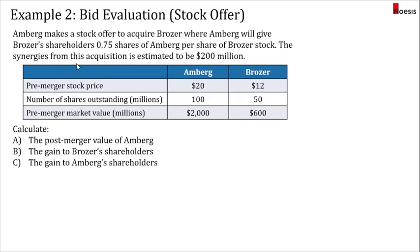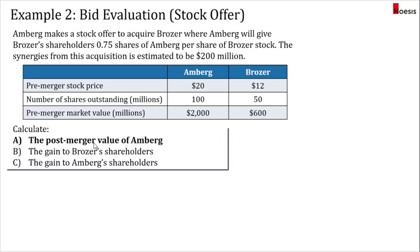Now let's look at Example 2, where the bid is made with a 100% stock offer. Emberg makes a stock offer to acquire Browser, where Emberg will give Browser's shareholders 0.75 shares of Emberg per share of Browser's stock. The synergies are estimated at $200 million and all other details are the same as Example 1. We will calculate: (A) the post-merger value of Emberg, (B) the gain to Browser's shareholders, and (C) the gain to Emberg's shareholders. Since there is a stock offer involved, it's best to calculate the post-merger value first.